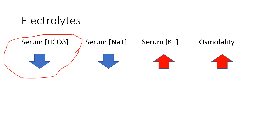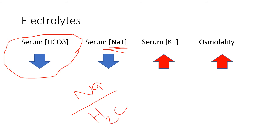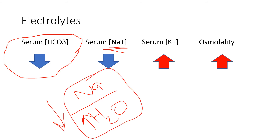Serum sodium concentration is low because of dilutional hyponatremia, since glucose drives water into the vessel. If you remember the equation, serum sodium concentration represents total body sodium over total body water — so if you have a lot of water, you have low serum sodium concentration. And obviously there is high serum potassium and high osmolality because there's a lot of glucose.